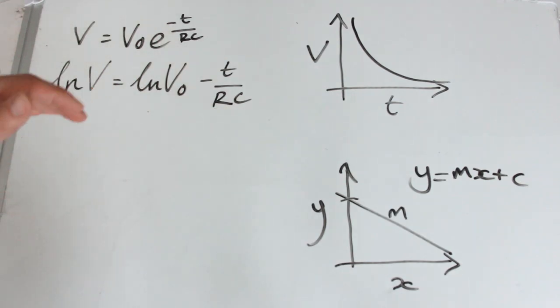Okay, so now the next step down we can actually just move this around until we get that form that we're looking for, the Y equals MX plus C form.